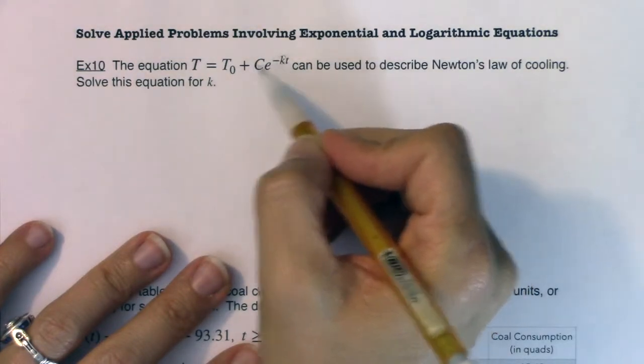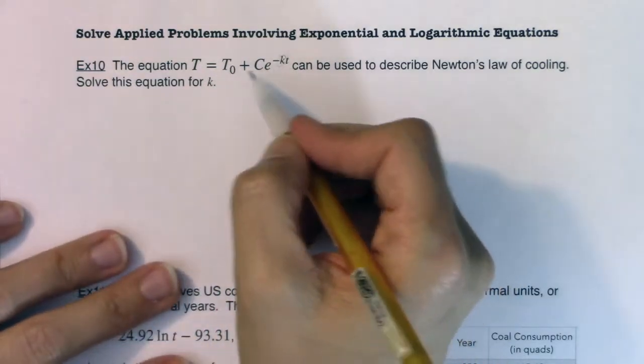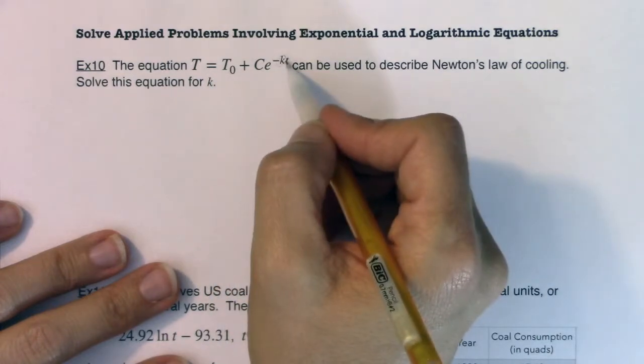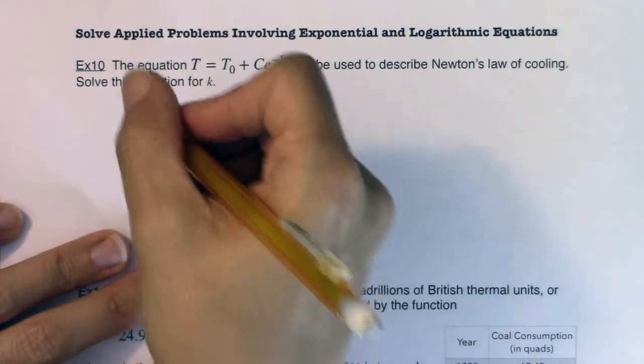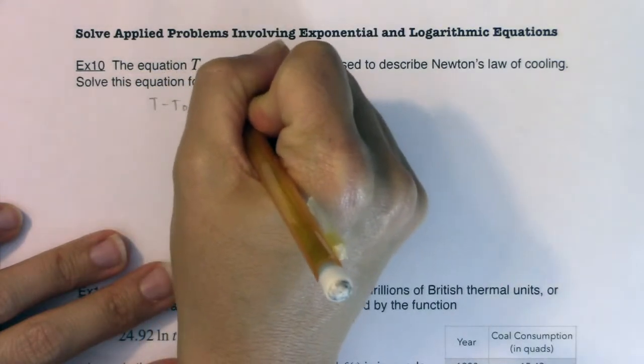It's not isolated right now. I've got a t sub zero here. I've got a c here. So the first thing I'm going to do is subtract the t sub zero to the other side of the equation. When I do that, I'm going to have t minus t sub zero is equal to c e to the negative kt.